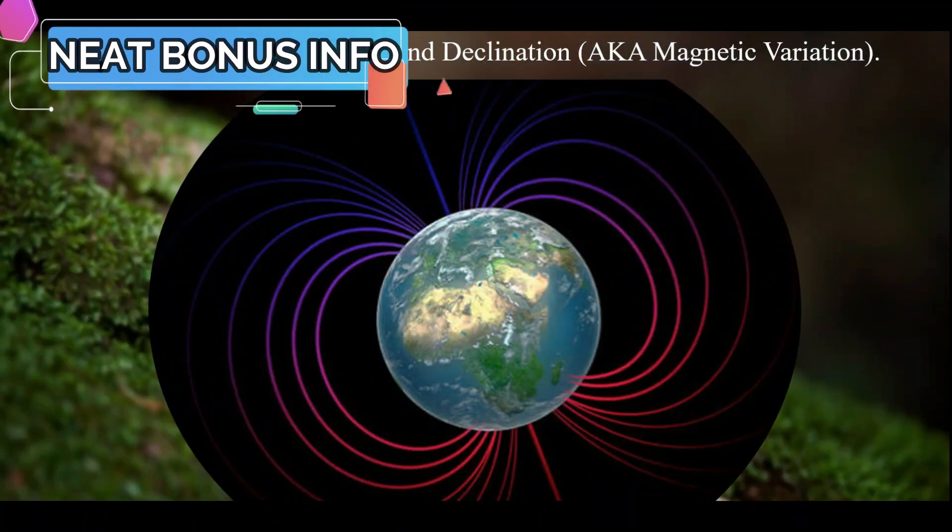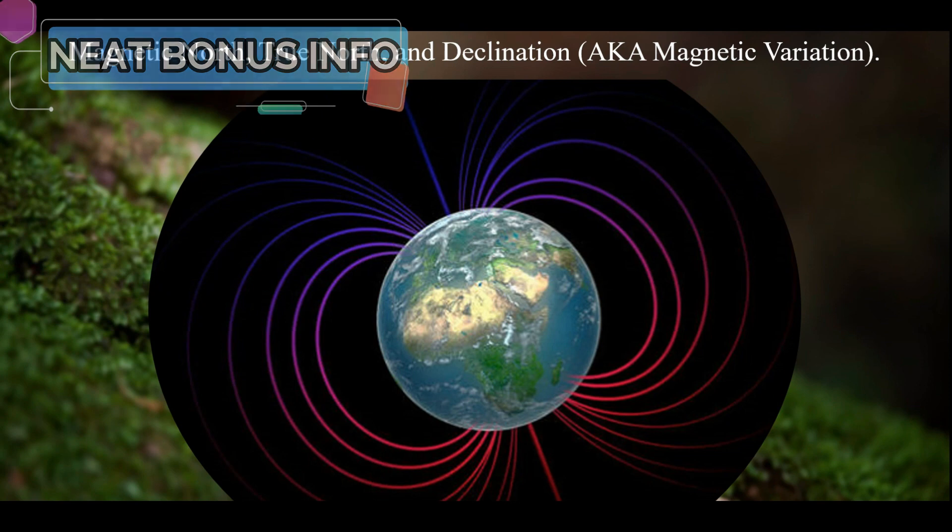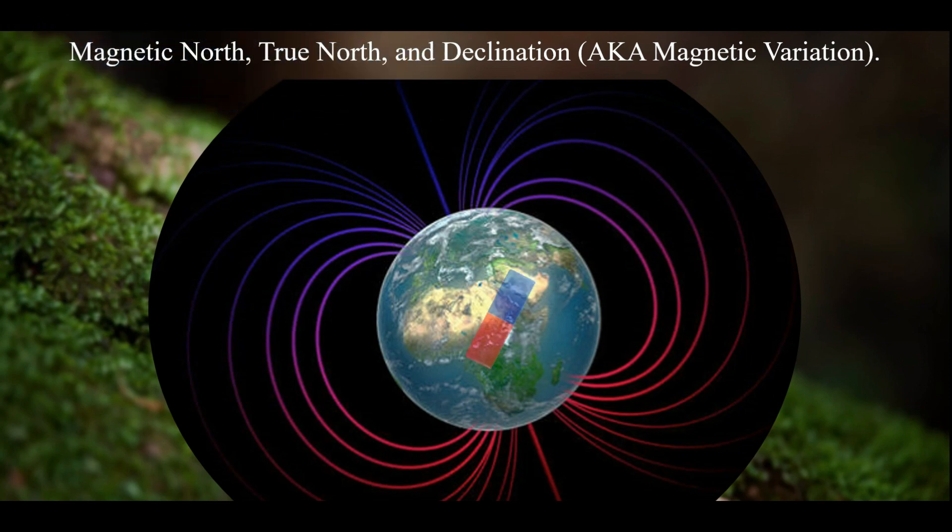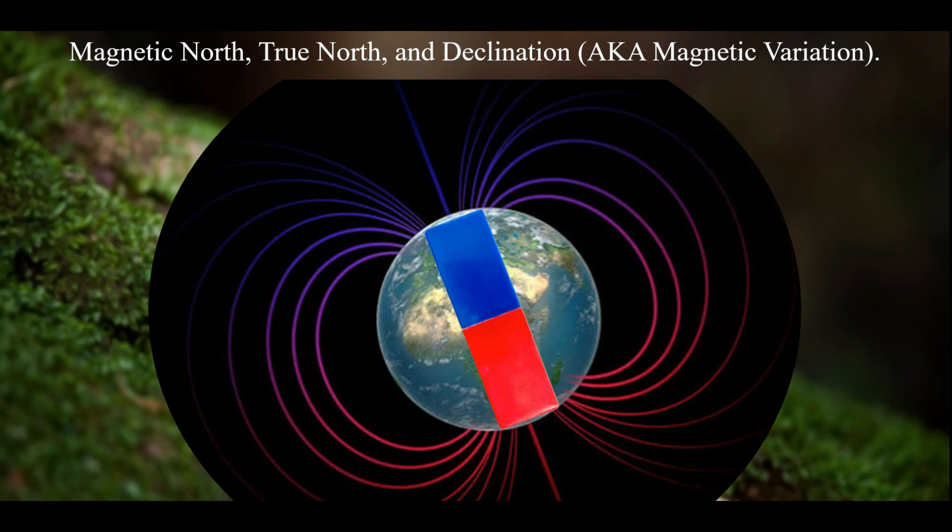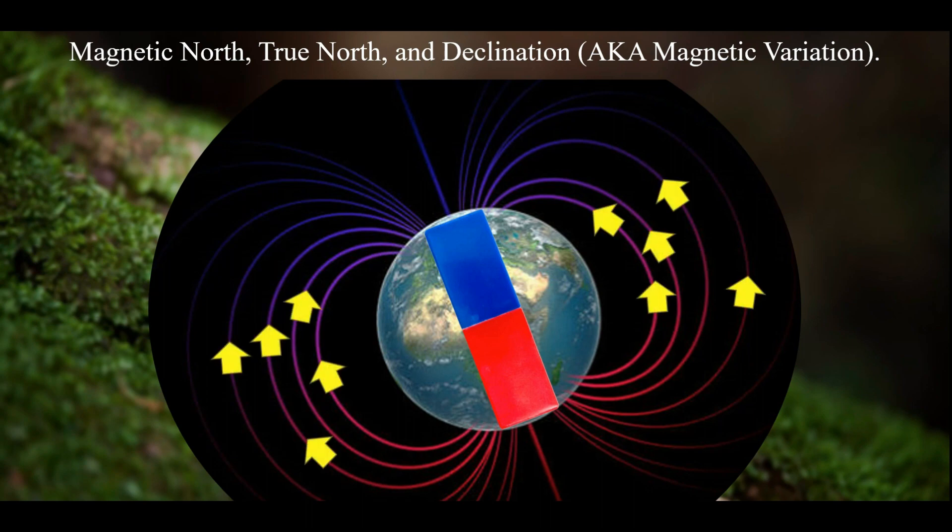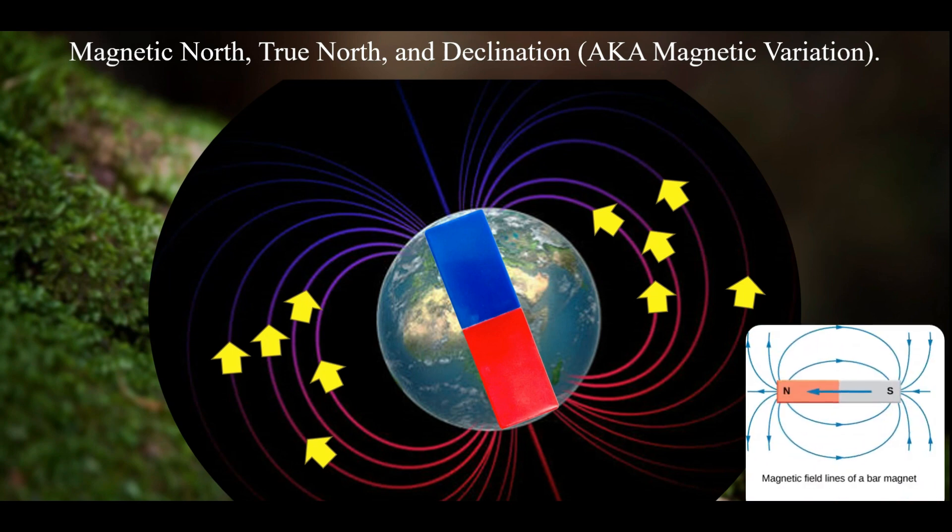So this is Earth, and Earth has that magnetic field around it. So Earth kind of acts like a big bar magnet where you have two poles, a north pole and a south pole. Now, I want you to remember that image that I showed you earlier about the bar magnet with the lines going out. The lines are a certain direction, so I just put a few of them here. And remember what I said earlier, that the magnetic field lines go from the north pole to the south pole.